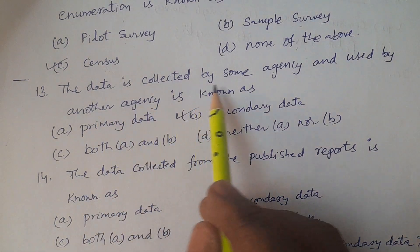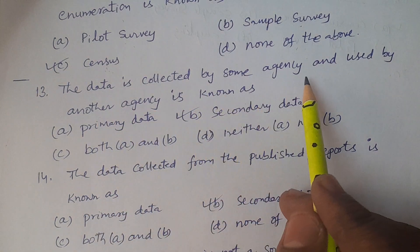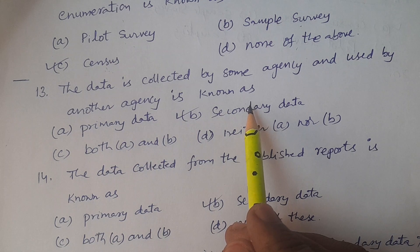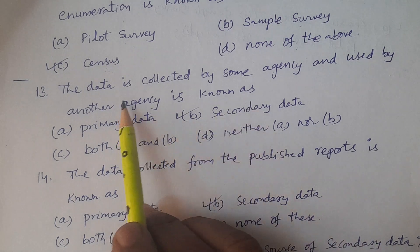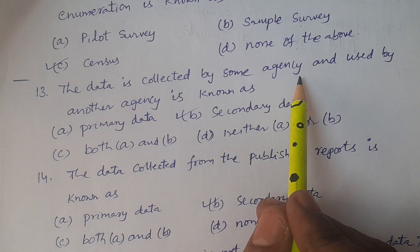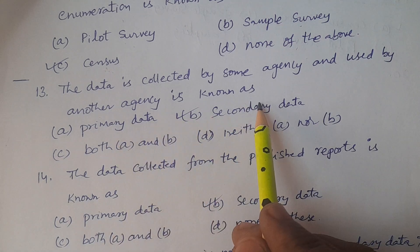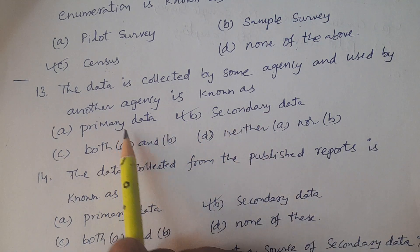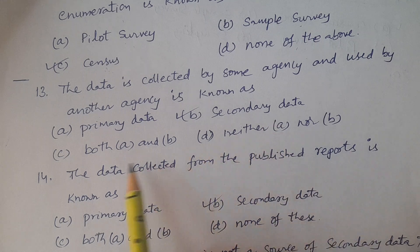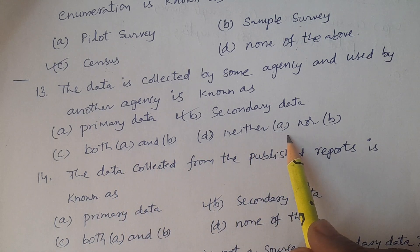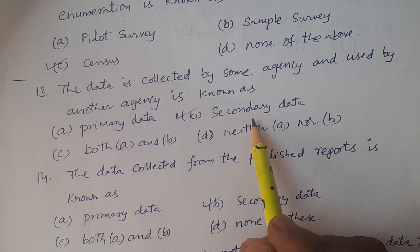The data is collected by some agency and used by another agency is known as: A. Primary data, B. Secondary data, C. Both A and B, D. Neither A nor B. The answer is secondary data.